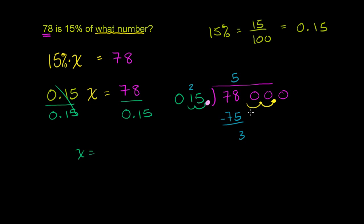Bring down a 0. 15 goes into 30 exactly 2 times. 2 times 15 is 30. Subtract, no remainder. Bring down the next 0. We're still to the left of the decimal point. The decimal point is right over here. If we write it up here, which we should, it's right over there. So we have one more place to go. So we bring down this next 0.